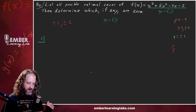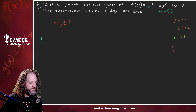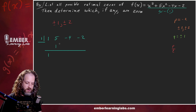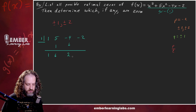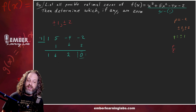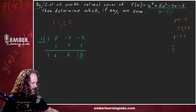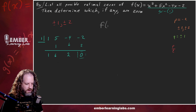We list our coefficients: 1, 5, negative 4, and negative 2, and divide. Bring the first one down. One times one is one; five plus one is six. One times six is six; negative four plus six is two. One times two is two; negative two plus two is zero. We found one of the zeros — the remainder is zero, so one is in fact a zero.